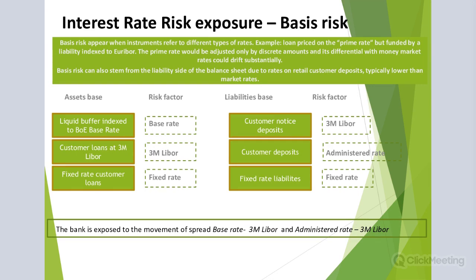The next important interest rate risk category is basis risk. Basis risk appears when instruments refer to different types of rates. For example, a loan which is priced on the prime rate but funded by a liability which is indexed to the market rate, like RIBOR or LIBOR.